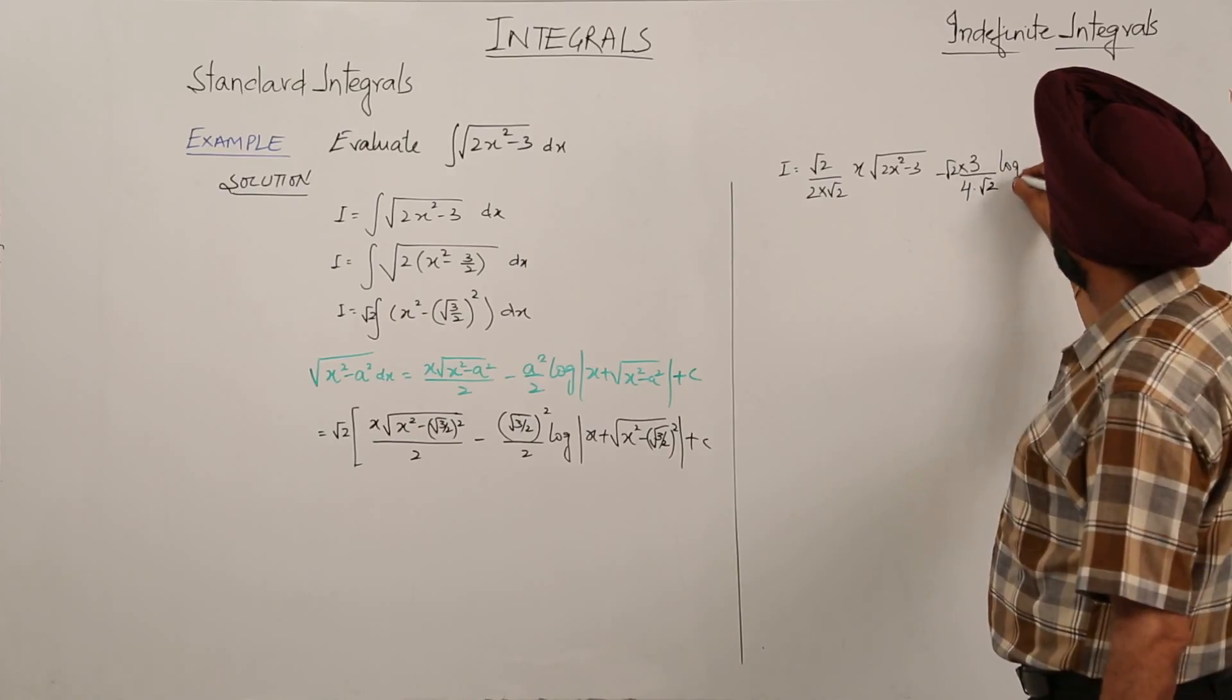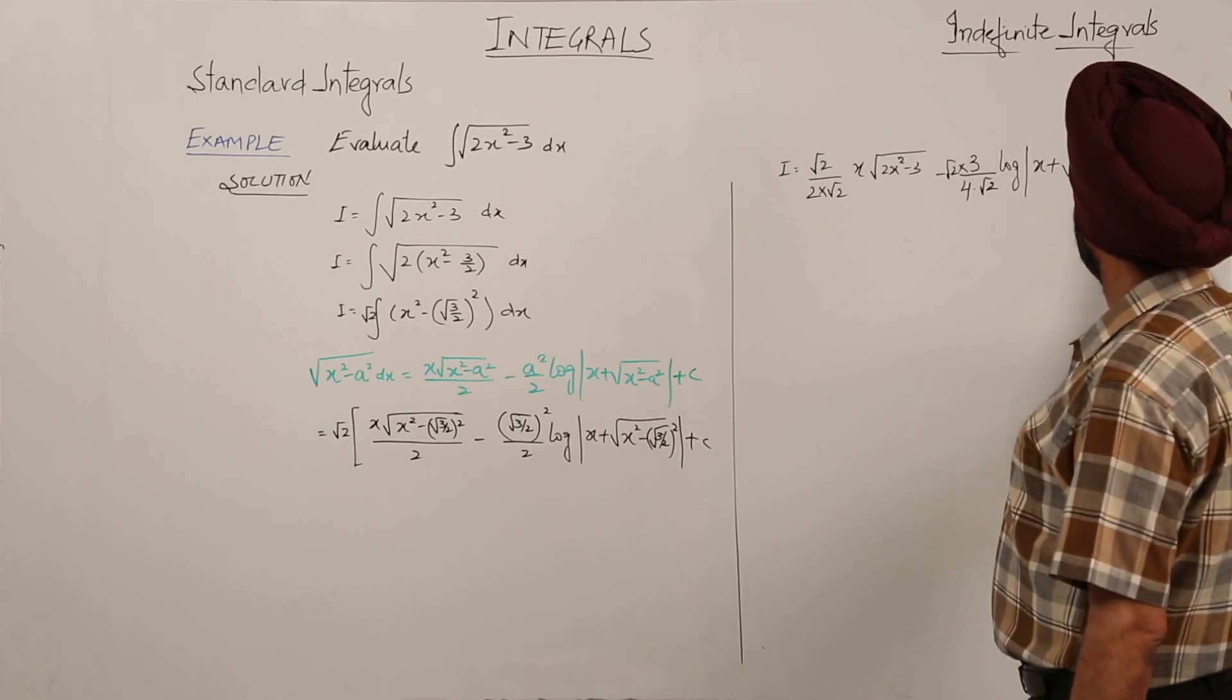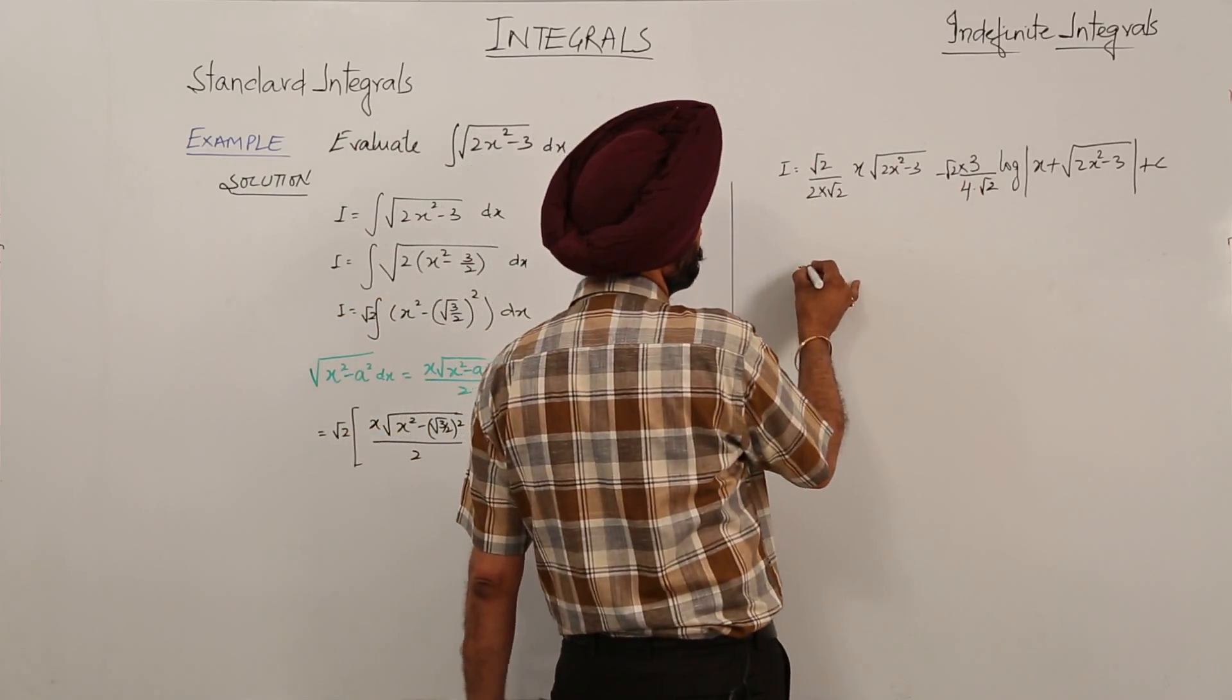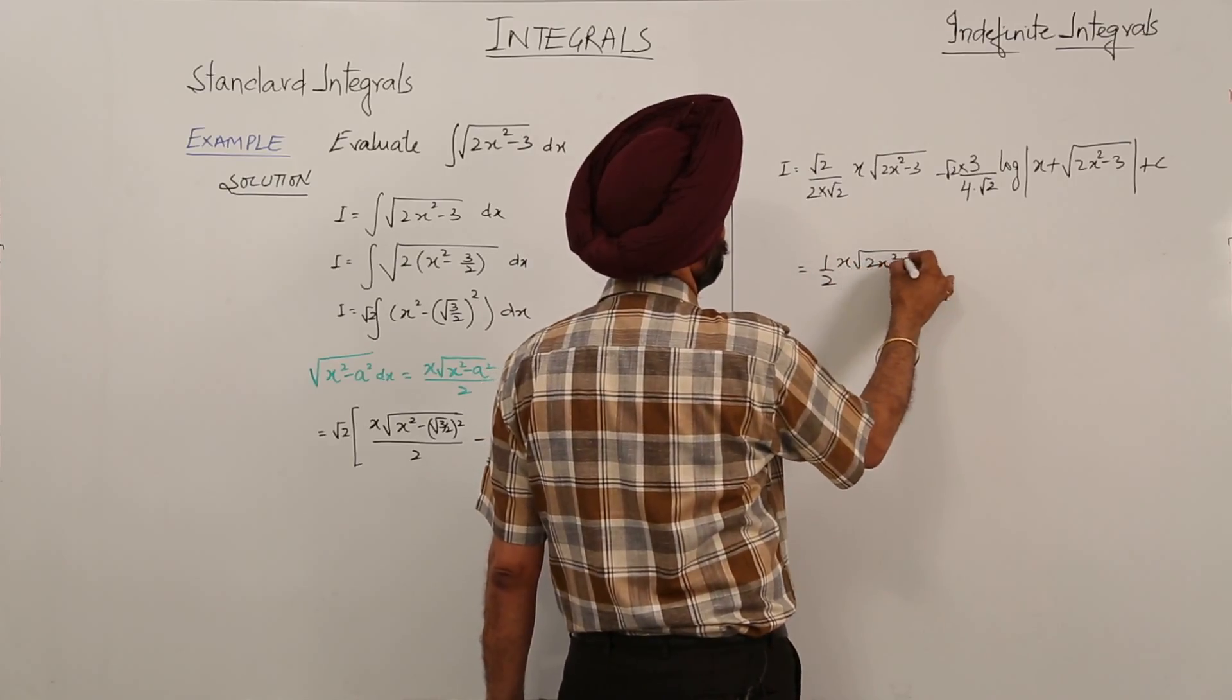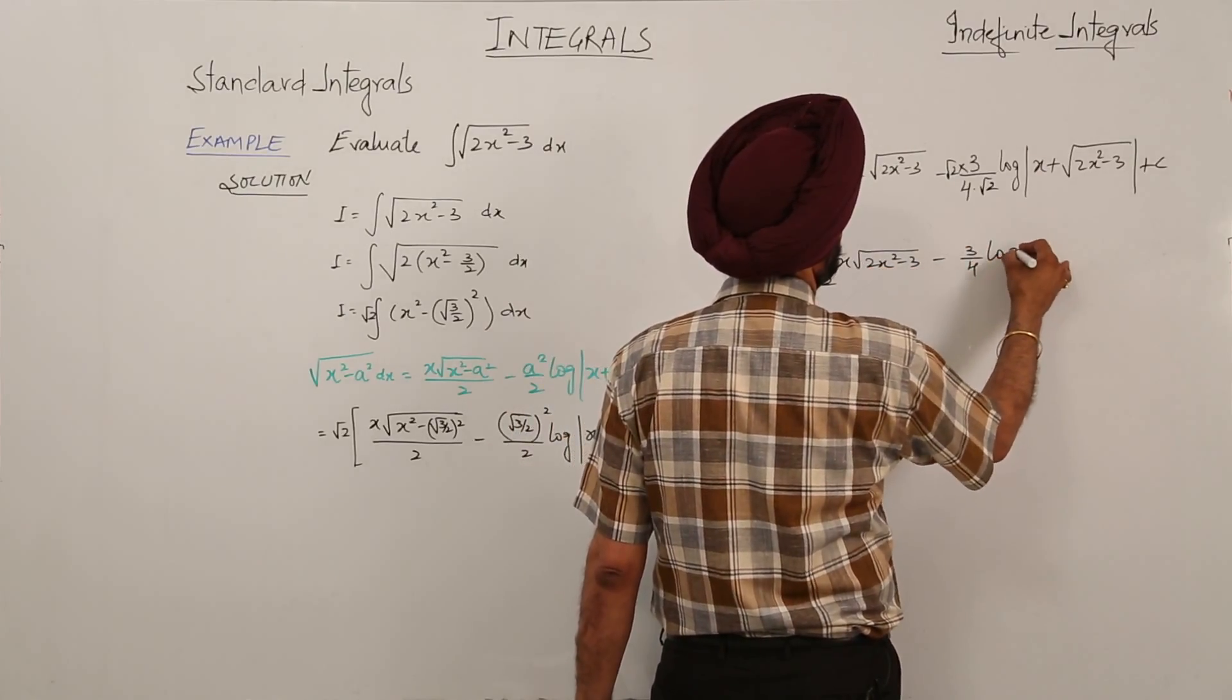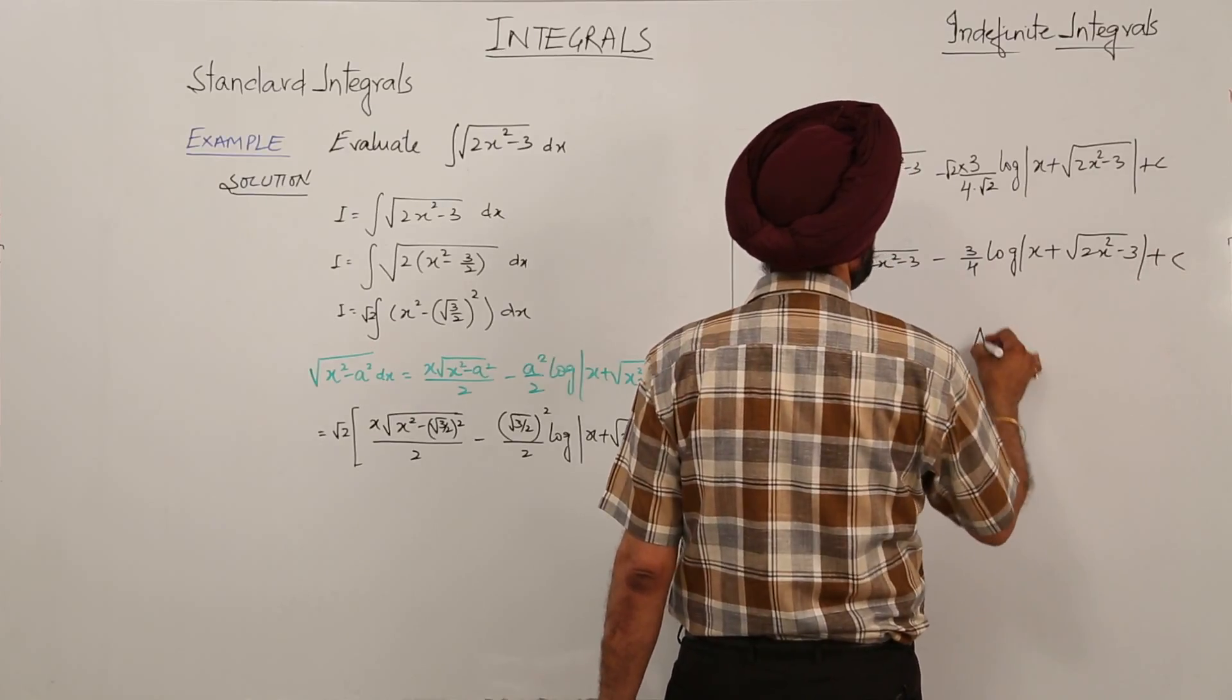x square root 2 plus c, and log x plus square root of 2x square minus 3 plus c. Answer.